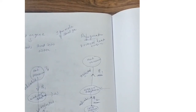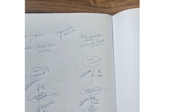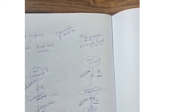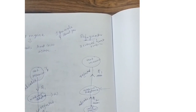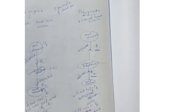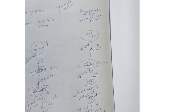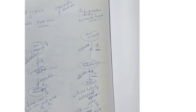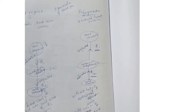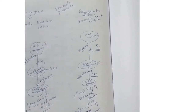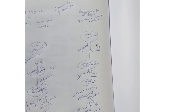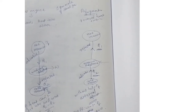Now we define the coefficient of performance. The coefficient of performance is the reciprocal of efficiency. Here the heat input is Q2, so alpha equals Q2 divided by W, which equals Q2 divided by Q1 minus Q2. The efficiency of a heat engine is less than 1, whereas the coefficient of performance alpha will be greater than 1.